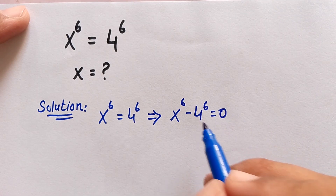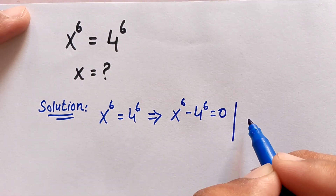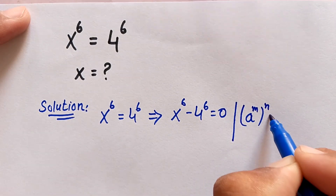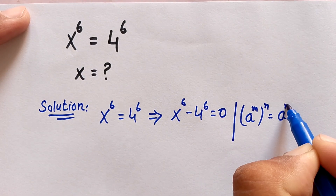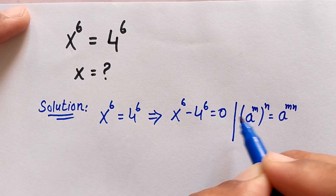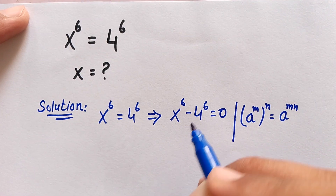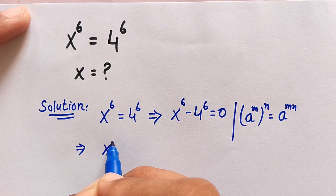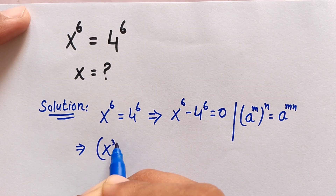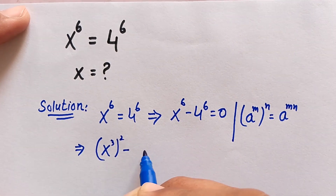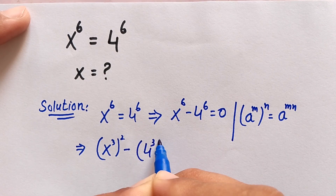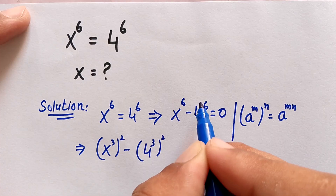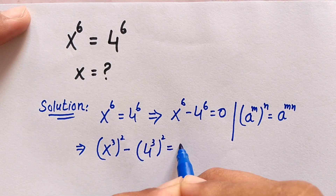To solve this, we know that a to the power of m, to the whole power of n, is equal to a to the power of m times n. Applying this, we can write x to the power of 3, to the whole power of 2, minus 4 to the power of 3, to the whole power of 2, which equals x to the power of 6 minus 4 to the power of 6, and this is equal to 0.